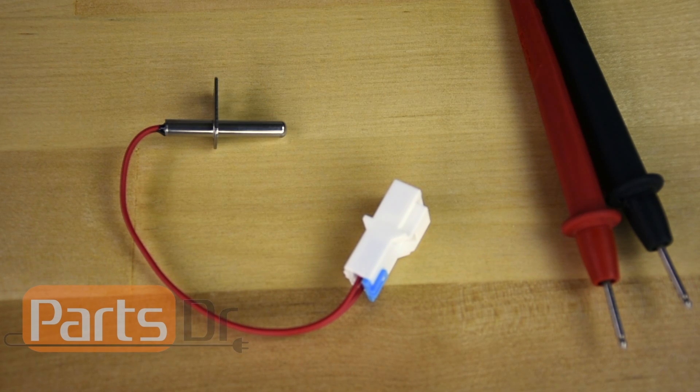To test your thermistor, you'll first need to unplug the dryer, disconnect the wires to the thermistor, and remove the thermistor from the dryer.